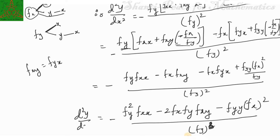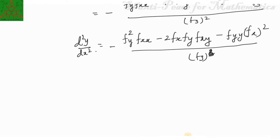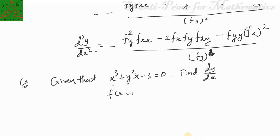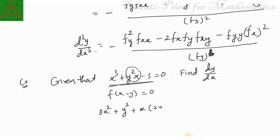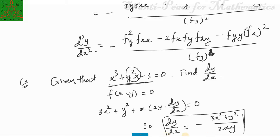For example, given x³ + y²x − 3 = 0, find dy/dx. This is an implicit function f(x, y) = 0. Differentiating both sides with respect to x: 3x² + y²(1) + x(2y)(dy/dx) = 0, using the product rule. Simplifying, dy/dx = −(3x² + y²) / (2xy). That is your final answer.